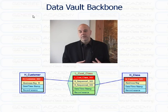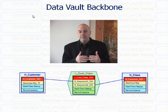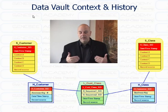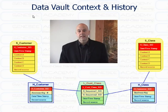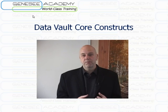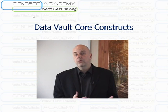The backbone of the data vault is hubs and links — all the business keys and how they relate. But the backbone is not volatile; it doesn't have anything to do with history or context or how things are described. If you want that history and that context, you add on the satellites, which define what's happening with these keys over time. This backbone concept means the vault constructs are very solid but also very quickly adaptable to new context and historical tracking, making them a very strong choice for enterprise data warehousing.